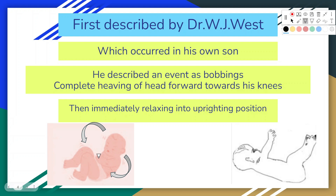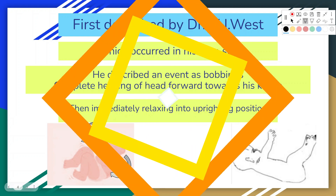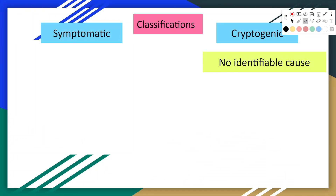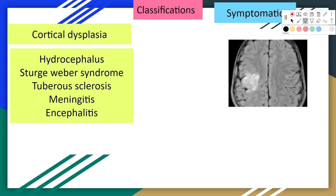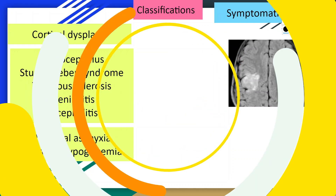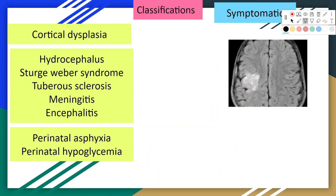These events were repeated from 10 to 20 or more times at each attack. Regarding etiologies, infantile spasms are classified as either symptomatic or cryptogenic based on whether an underlying etiology can be found. Cortical dysplasia is the most common cause of symptomatic infantile spasms, accounting for up to 30% of perinatal cases. Hydrocephalus, Sturge-Weber syndrome, tuberous sclerosis, meningitis, and encephalitis are also potential causes.